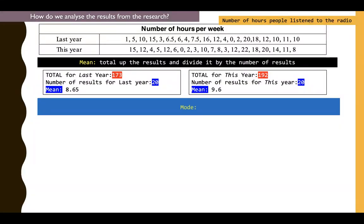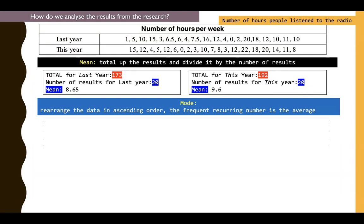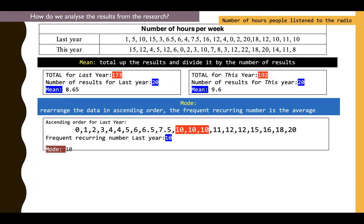Another way to look at averages is to look at the mode. The mode is the number that appears most frequently in your set of data. But before you can do that, you'll need to rearrange the information in ascending order, which means from the smallest to the biggest number. So if you were to do that with last year's information, I have rearranged it all here on the screen, you can see that the number that occurs frequently is the number 10. It occurs three times. So the recurring number is 10, which is basically 10 hours, and hence the mode average is 10 hours for last year. So you can see the difference between the mean when you divide it by each number and mode where you pick out the recurring number.